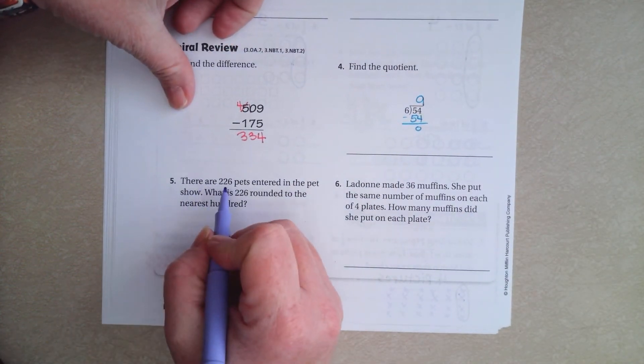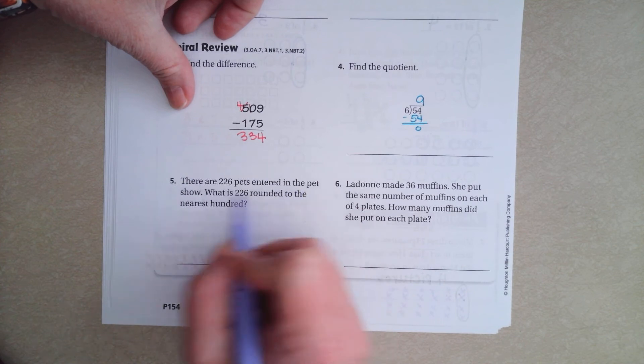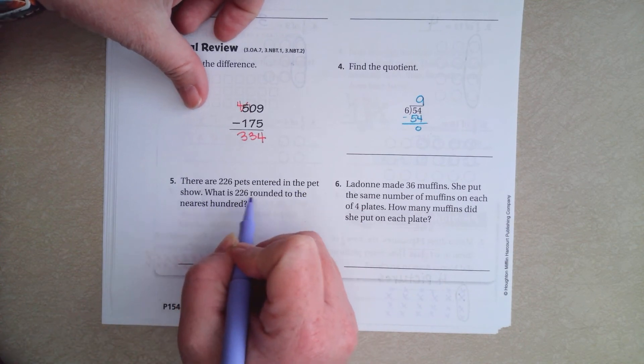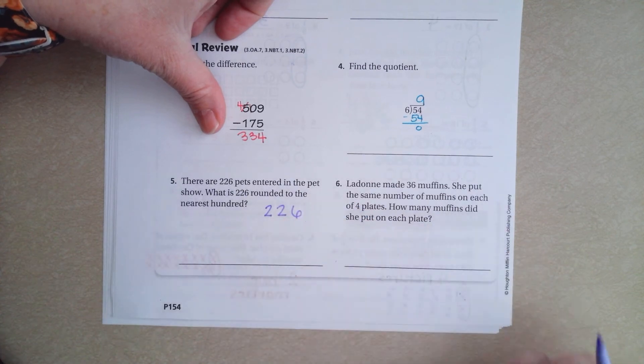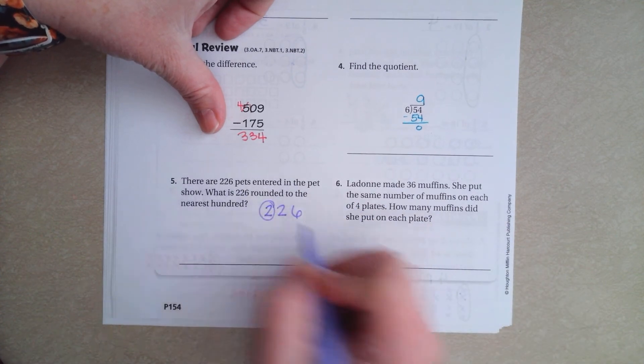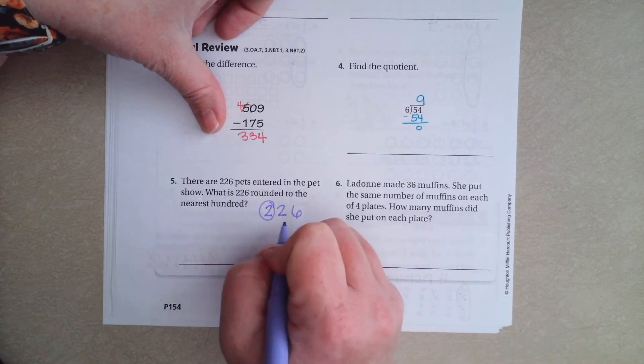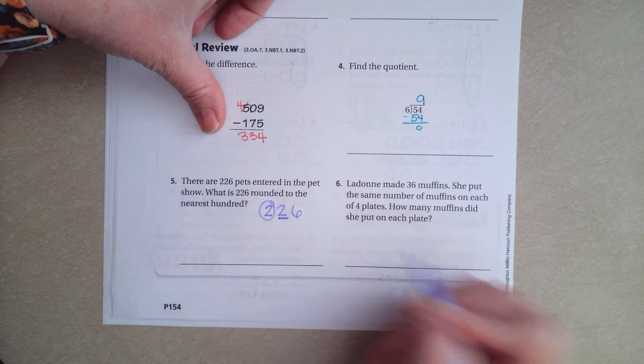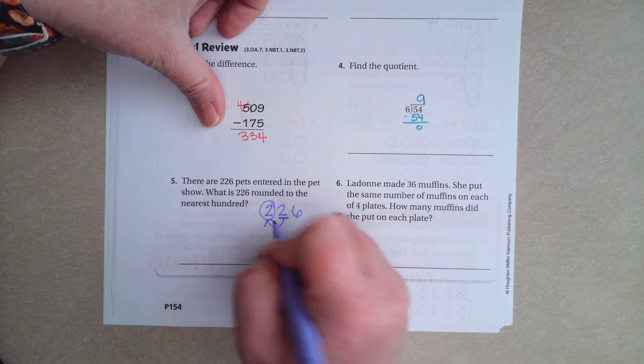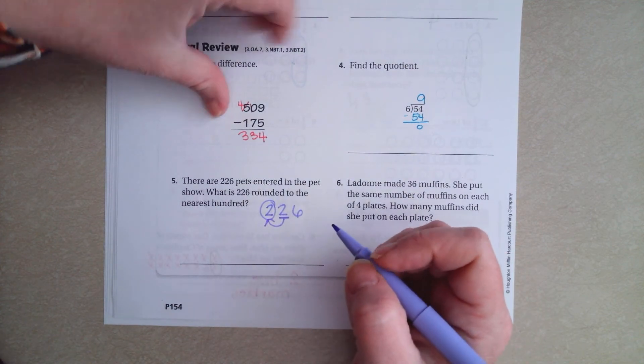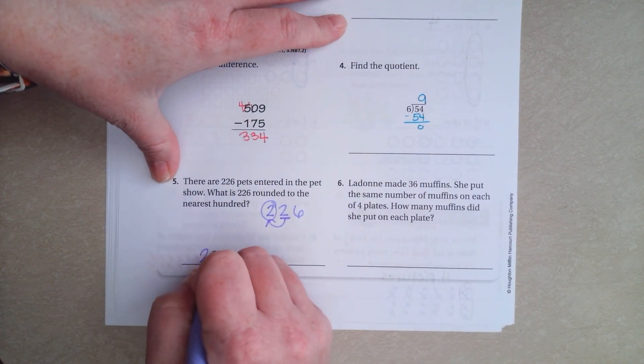There are 226 pets entered into the pet show. What is 226 rounded to the nearest 100? We're going to go 226. In order to know if this needs to go up to 3 or remain at a 2, we need to look at this. If that is 5 or bigger, it will make it round up. If it is not, it stays the same. Well, 2 is less than 5, so it is going to be 200.